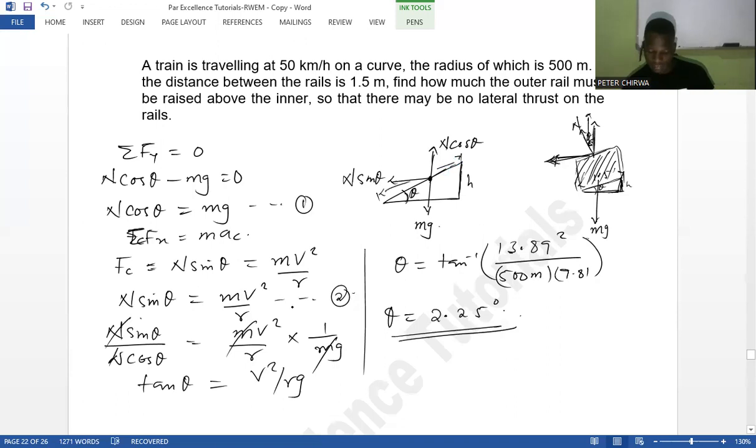Now we have that distance, like I said, 1.5. What we need is just sin theta being equal to h over that length. So h is equal to that length times sin theta. That is going to be 1.5 meters times sin of 2.25 degrees.